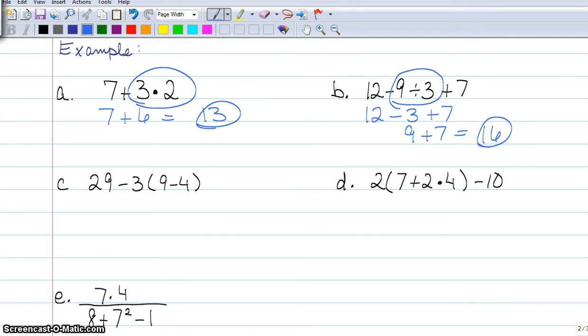Next I have 29 minus 3 times 9 minus 4. I have to take care of what's in parentheses first, so I have 29 minus 3 times 5. Now I have 29 minus 15, and 29 minus 15 gives me 14.